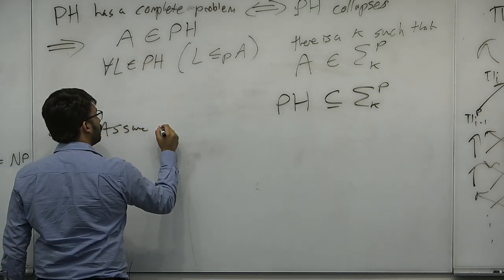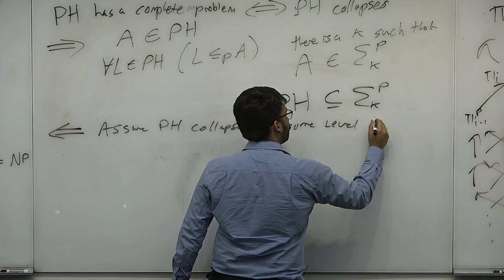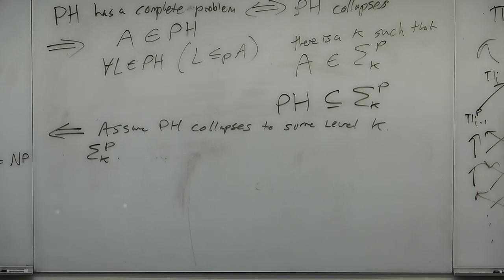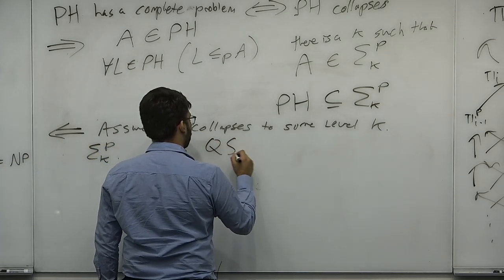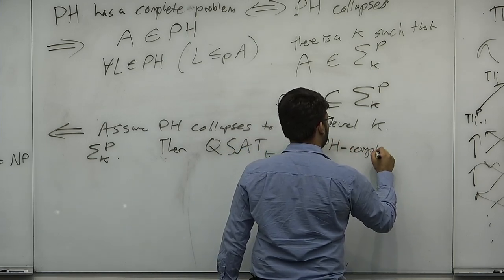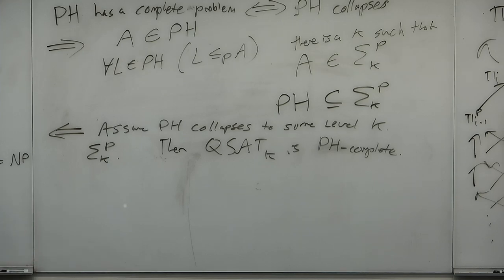The reverse is simpler: assume PH collapses to some level K — say Sigma-K. Then QSAT_K is PH-complete, because QSAT_K is Sigma-K-complete and the whole hierarchy equals Sigma-K. So the polynomial time hierarchy cannot have a complete problem unless it collapses. I want to emphasize how simple the proofs are relative to how complex the definition of the polynomial hierarchy is.